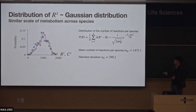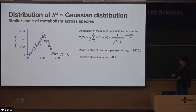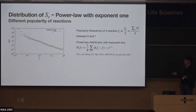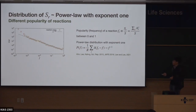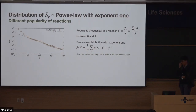The number of reactions in a species — their distribution is almost Gaussian. On average, 1,500 reactions are found in the metabolism, and the distribution takes a normal distribution. But interestingly, when you check out the distribution of S(R) — how many species have that specific reaction R — it takes a power law. When you fit the data to a power law, you find that the exponent is 1.00. So it's a power law with exponent 1, and these things were identified in the analysis of the empirical data.